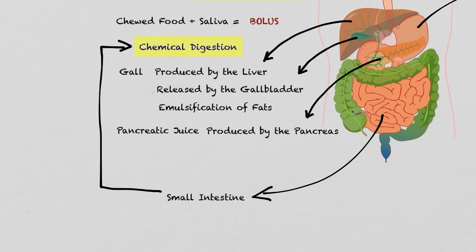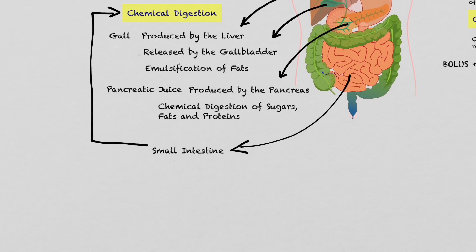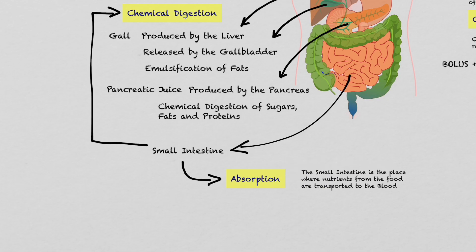The second process carried out by the small intestine is the absorption of food. The small intestine is the only place in the digestive system that can absorb nutrients — the only place where nutrients are transported from the digestive tube to the blood. When the chyme is digested by the pancreatic juice and bile, it is transformed into chyle.